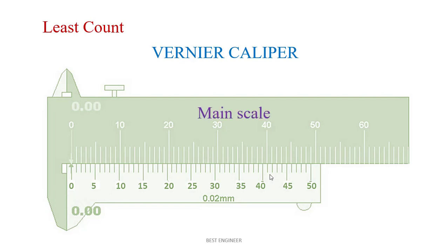One is the main scale. In the main scale, the graduation will be divided in mm. In the vernier scale, the graduation will be in divisions.